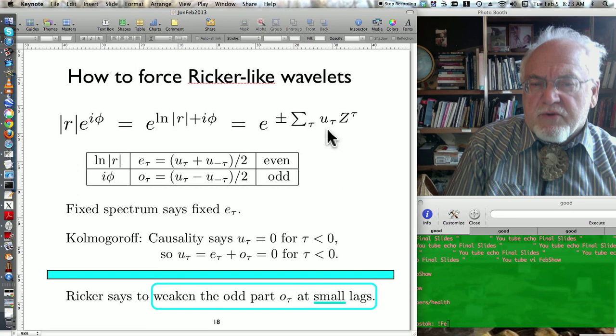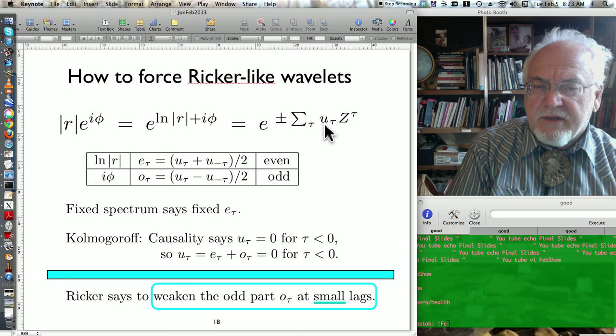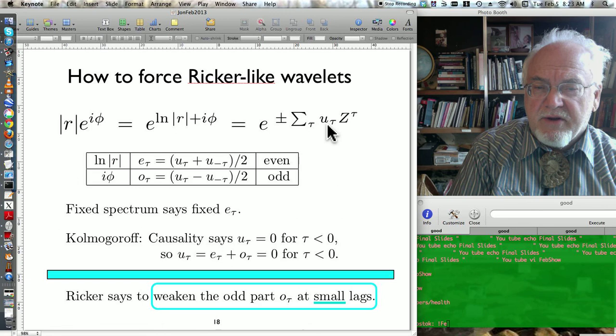So starting from this log spectrum, we can split this thing into even and odd parts. And the even part is, of course, the spectrum of R is even, and the log spectrum is even, and this R has an even part. And those are all connected. And that's given, and we don't change the even part.